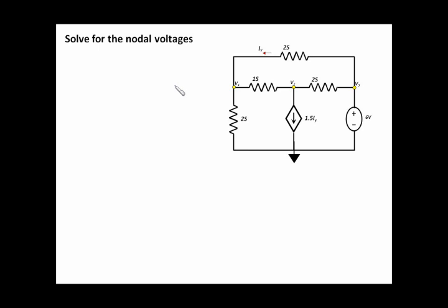Something else you have to look at is those resistors are given in terms of their conductances, because the value of those resistors are given in Siemens. So basically what that means is when we want to solve for the nodal voltages, we have to use Ohm's law that describes the current in terms of the conductance, so we can say that I equals G times V.